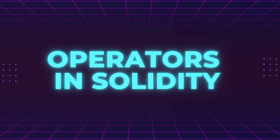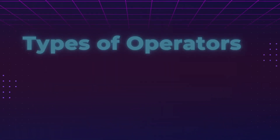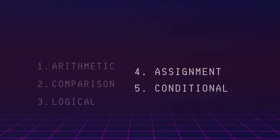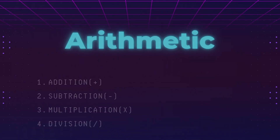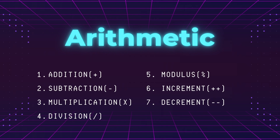In Solidity, like many other programming languages, we have five operator types: namely arithmetic, comparison, logical, assignment, and conditional. Starting with arithmetic, we have addition, subtraction, multiplication, division, modulus, increment, and decrement. As the name suggests, all of them perform some sort of mathematical operation on the operands involved.